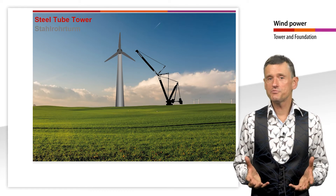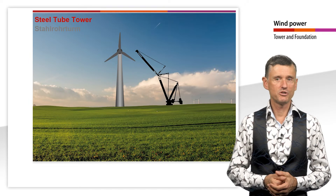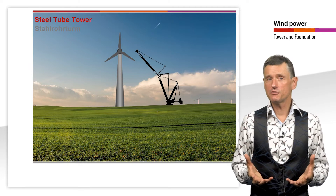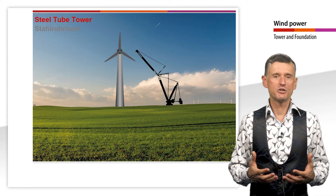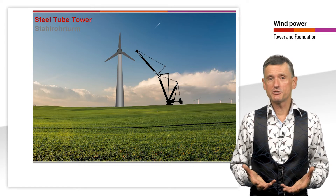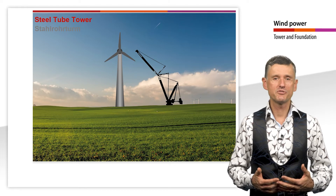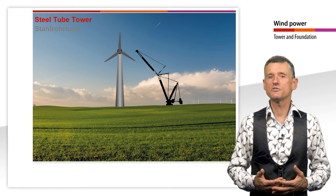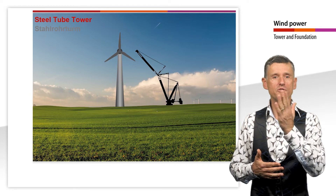If the transport routes to the erection site are possible without major obstacles, or if welding on site is also possible, one-piece towers are occasionally used. This saves the relatively costly bolted connections. The base of these towers is often too large for road transport and is welded together on site from several segments. Here the entire tower is welded together in a lying position and then erected with the help of a crane.